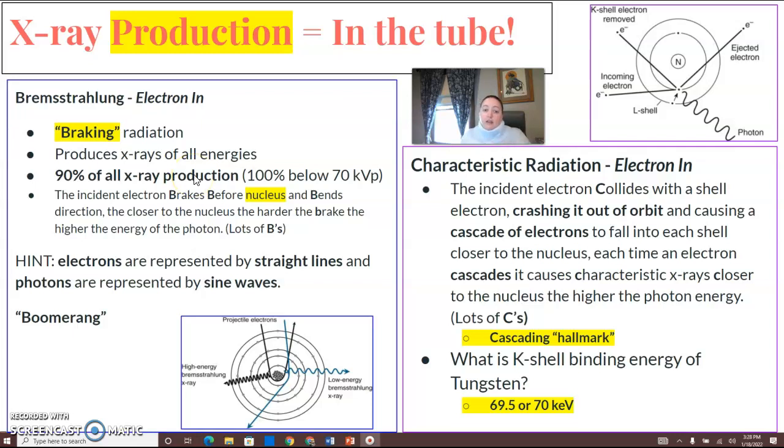X-rays below 70 kVp are 100% bremsstrahlung. We want to be able to see it by a picture, and you want to be able to see it or know it by a definition.